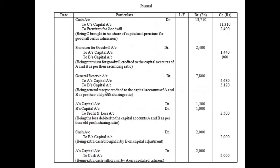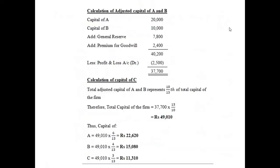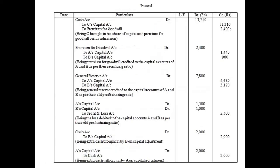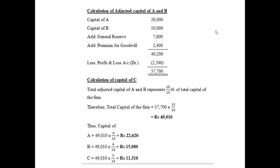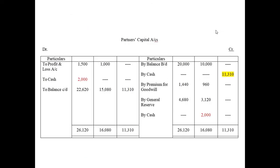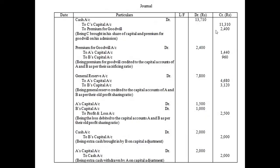Now let us move on to the journal entries. We know the first two entries by heart. C brings in his share of capital: 1,130 — we found this through the capital adjustment. For premium for goodwill, C brings in 2,400 — found from the goodwill calculation. Since the question states C will bring the required amount of premium for goodwill, we adjust by writing 'By Premium for Goodwill' in the capital account.